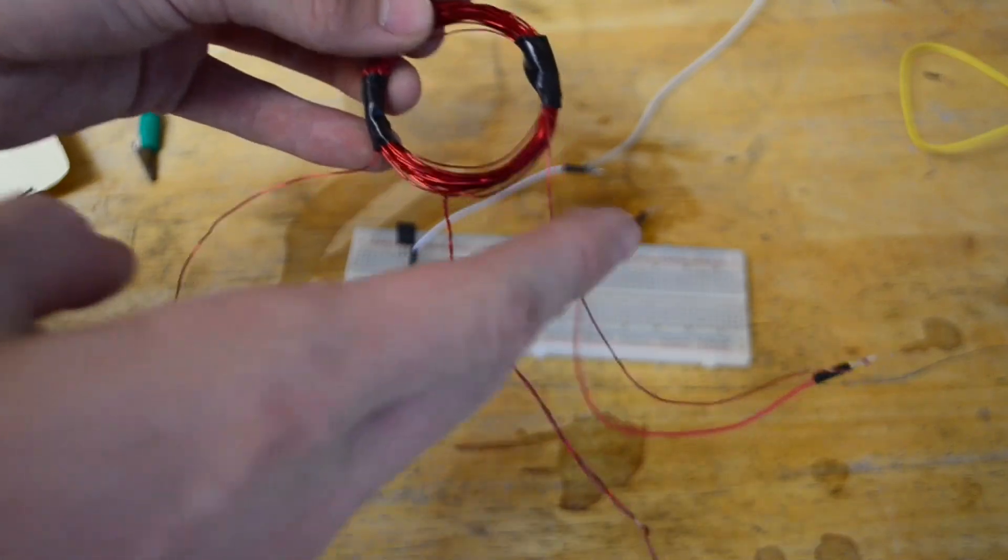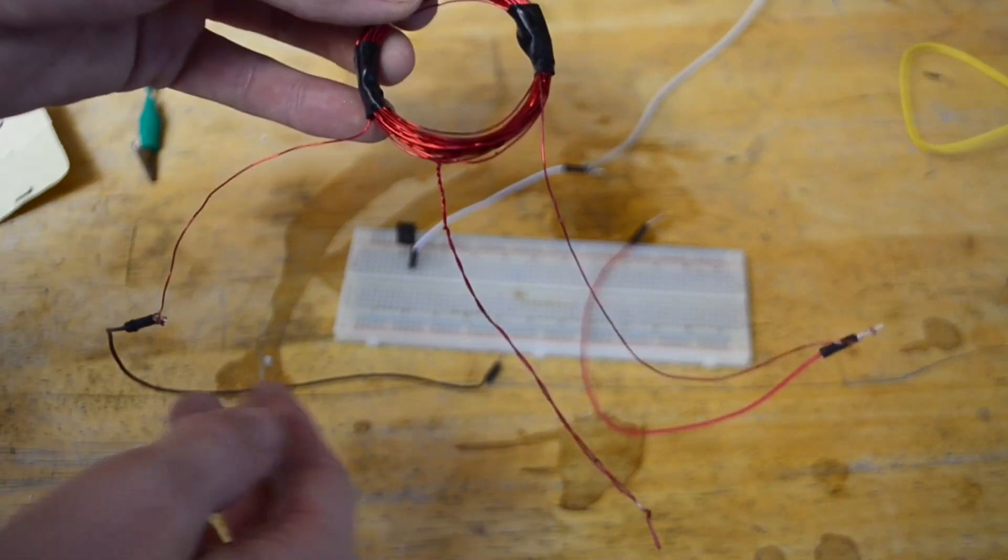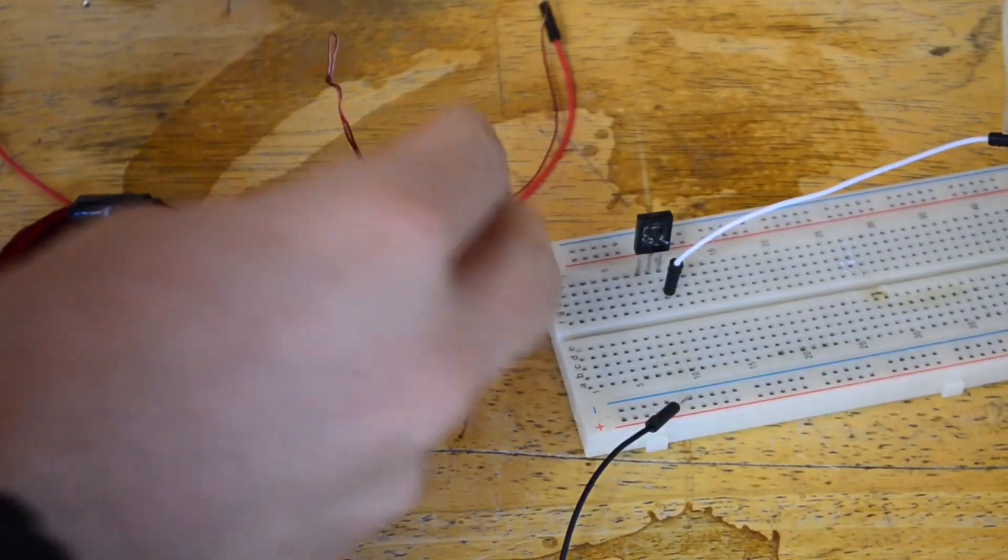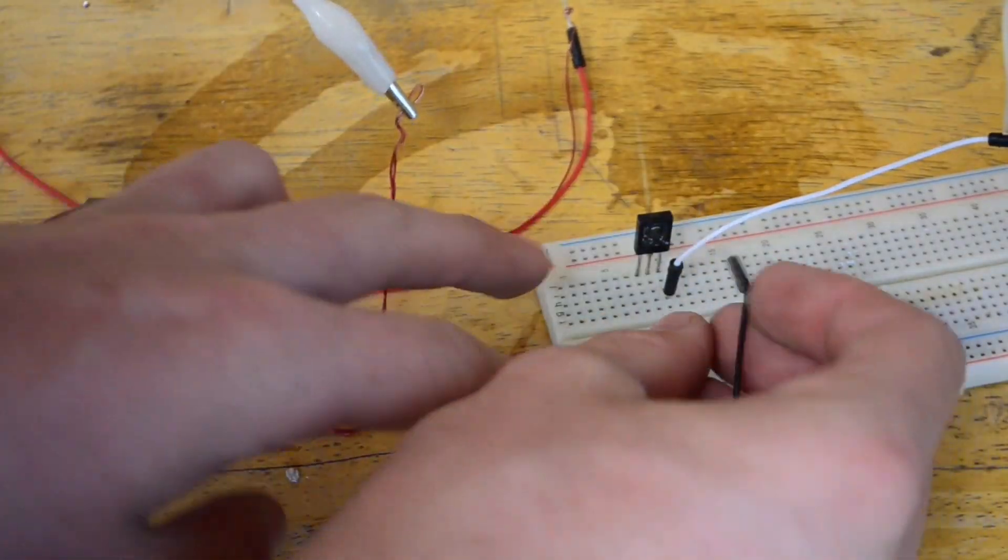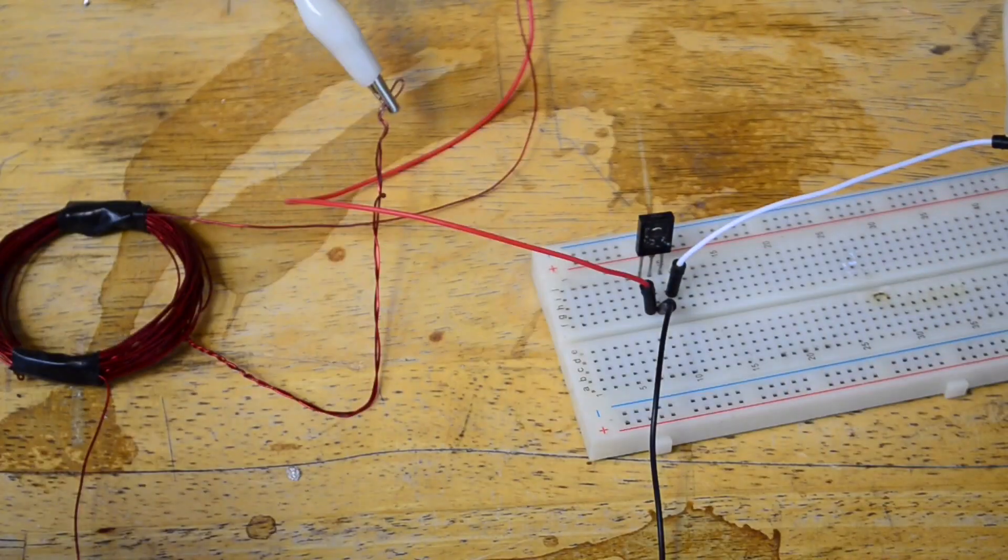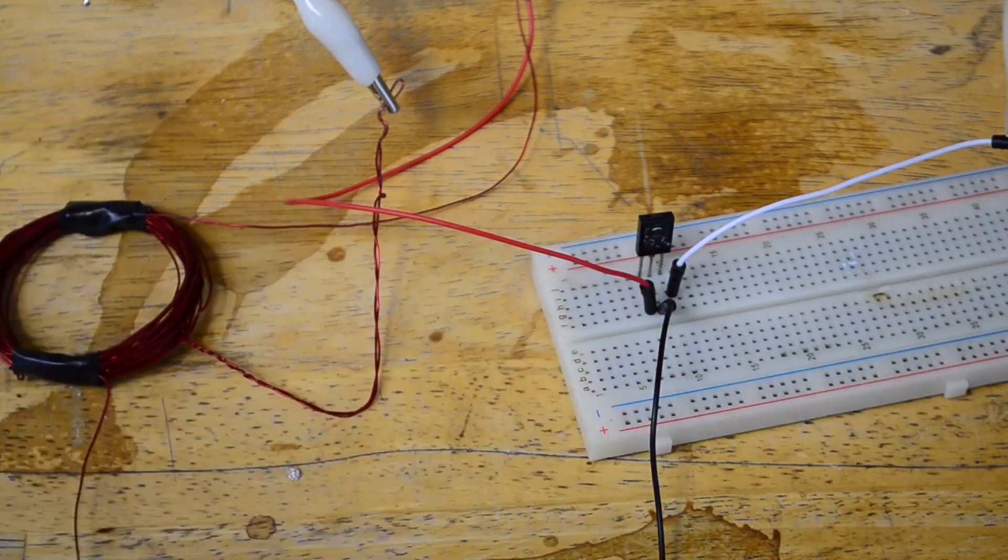With our center tapped coil, I've attached wires on the two ends and the center tap wire is going to be connected to our voltage positive. Connect one end of the coil to the collector and one end to the base. According to the schematic diagram this should be all we need.